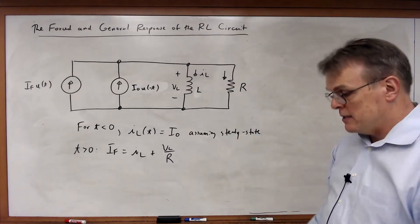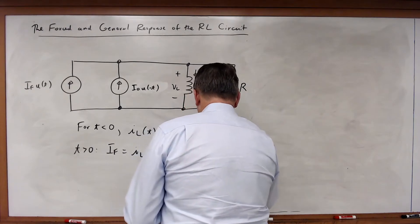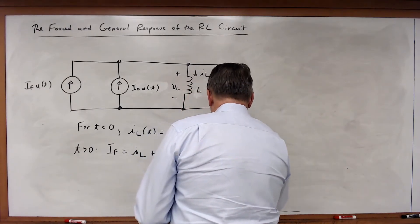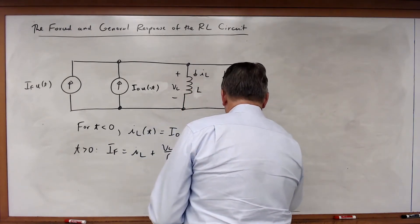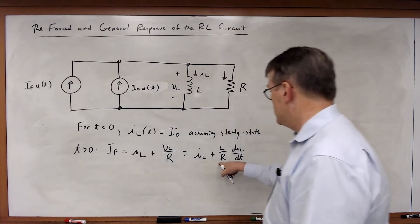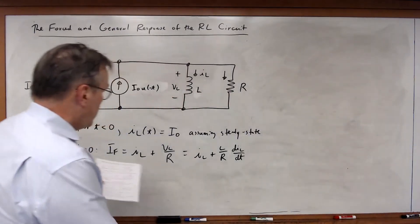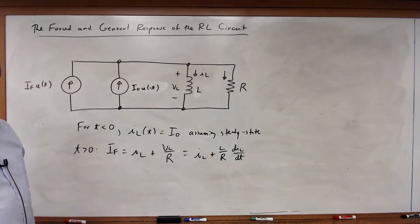And I write my KCL equation, and I can write this now as IL over L plus L over R, DIL DT. So IF is equal to this. Now I can go through, solve this first order differential equation.